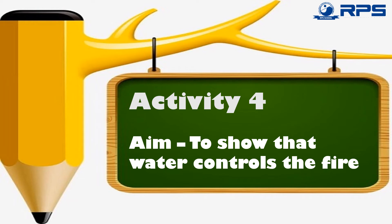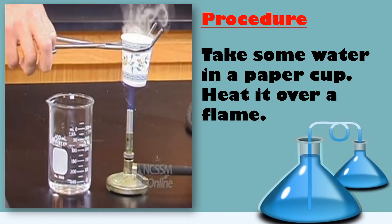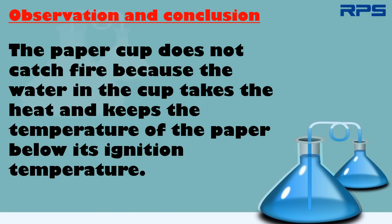Let us perform an activity to show that water controls fire. You will require water, a paper cup, a pair of tongs, and a burner. Take some water in a paper cup and heat it over a flame. The paper cup does not catch fire because the water in the cup absorbs the heat and keeps the temperature of the paper below its ignition temperature.